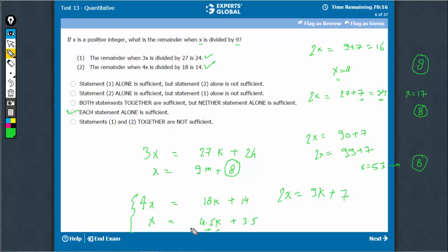For example, when k is equal to 1, x is equal to 4.5 plus 3.5, 8. 8 is a possibility. When x is equal to 8, when divided by 9, this still gives 8 as a remainder. So it's a peculiar case. This works very well. The answer is option D.